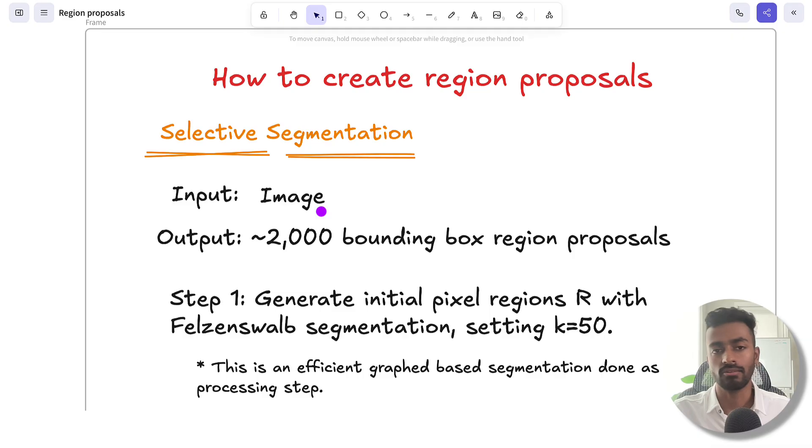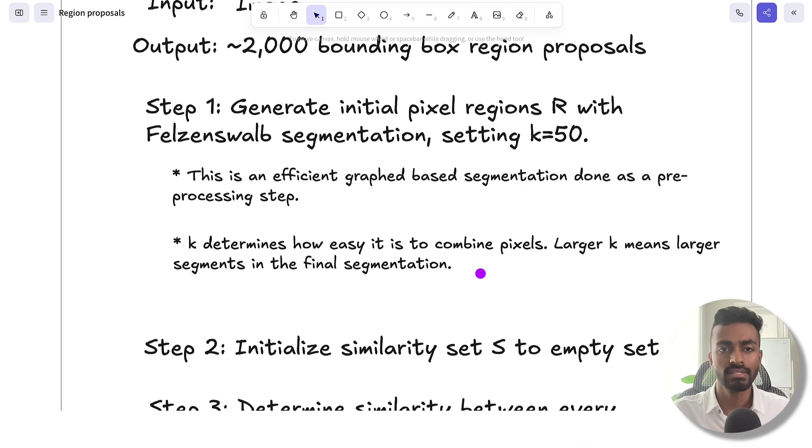So first, the input here is going to be an image. The output is going to be 2,000 bounding box region proposals. Step one.